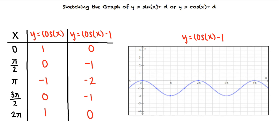We see that the period of the graph is unchanged, but the maximum value is now 0, and the minimum value is now negative 2. So the midline of the graph is the horizontal line, y equals negative 1, which has been shifted down one unit from the midline of the original function.